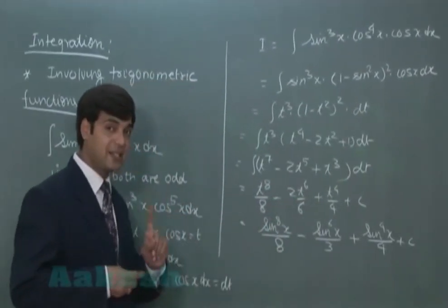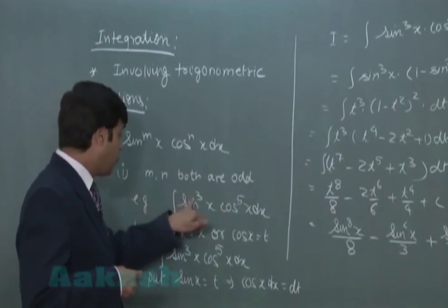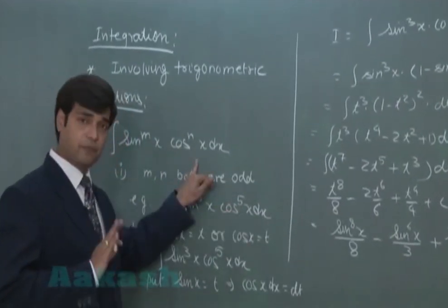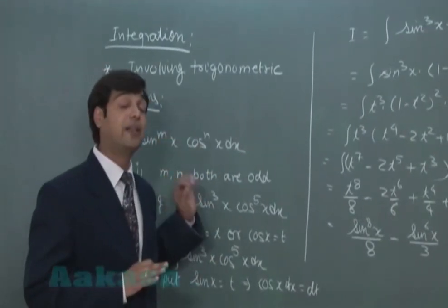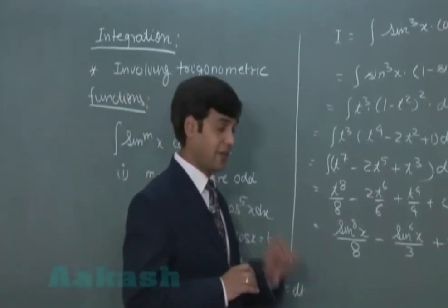So, first case I considered when m as well as n both are odd. Fine? Let's move to the second case. When one is even, other is odd. Then how we make this substitution? Let's try this thing.